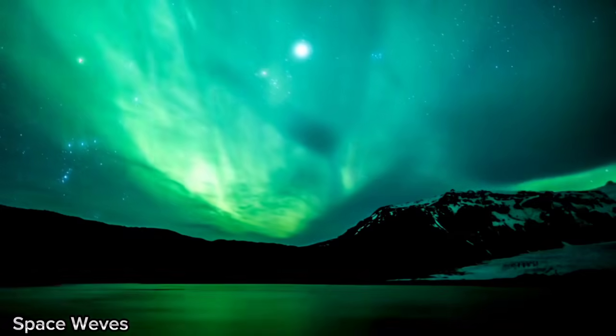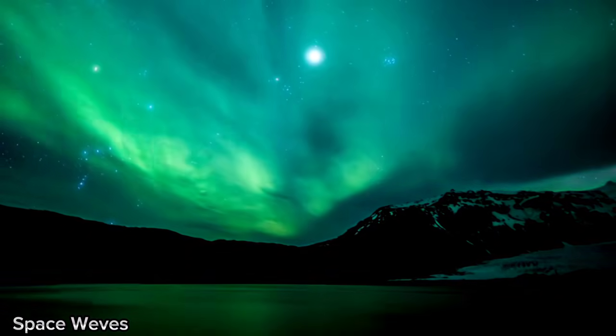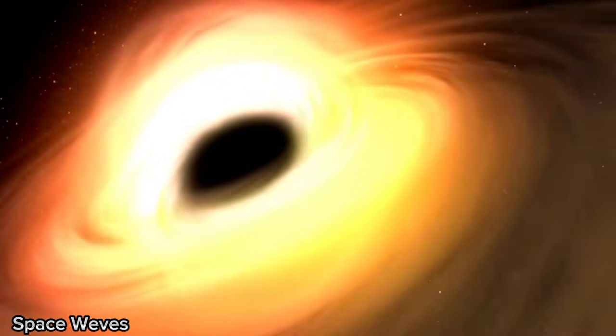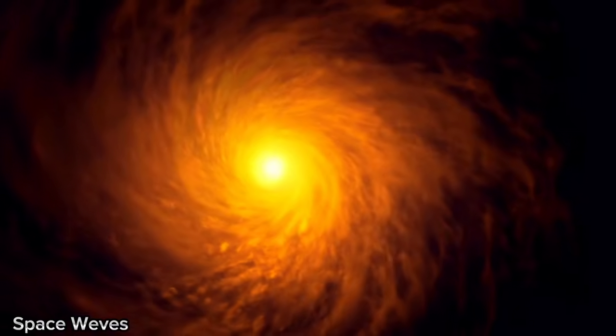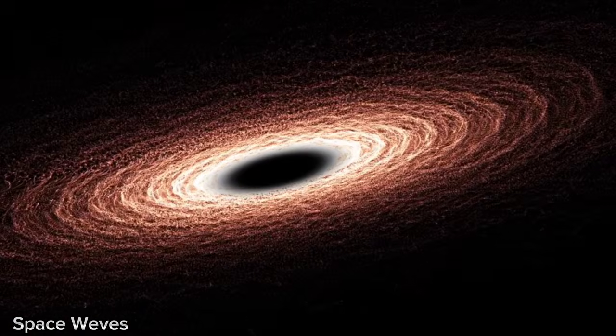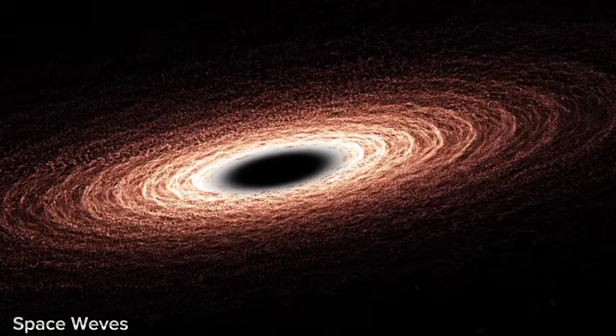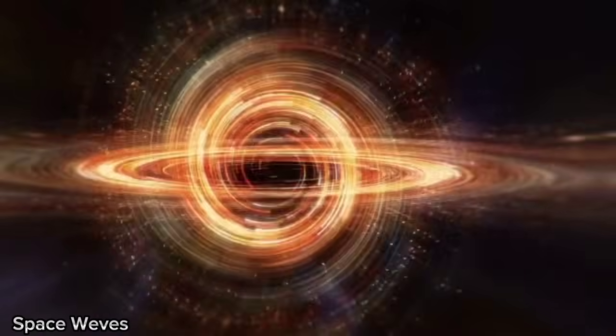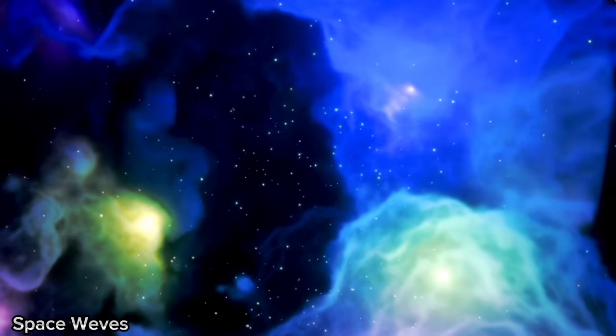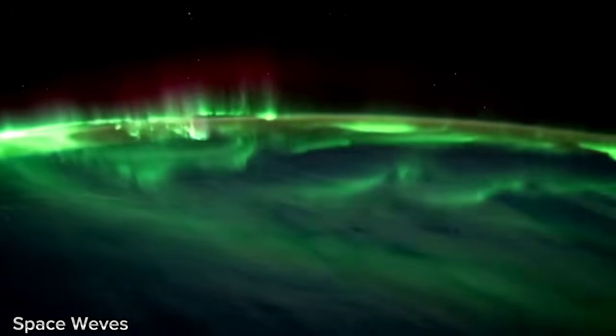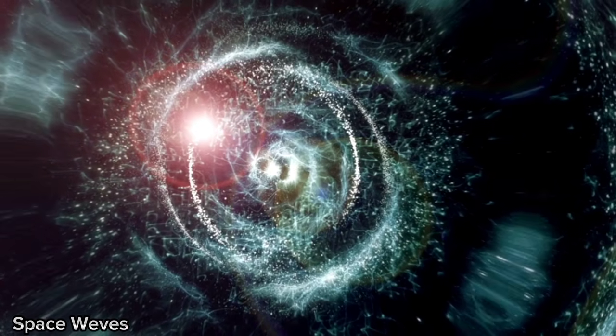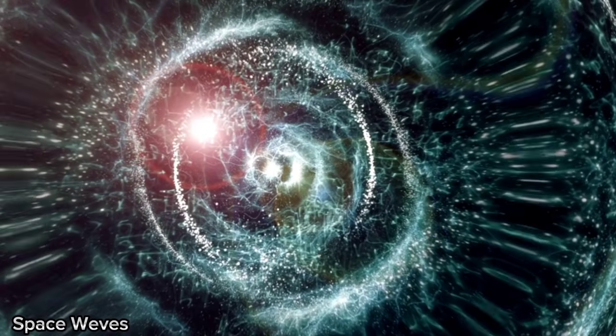The impact on our night sky: when Betelgeuse explodes, it will become one of the brightest objects in the night sky. For weeks, or even months, it could shine as brightly as a full moon, casting shadows at night. After the initial explosion, the star's brightness will gradually fade as the ejected material disperses into space. Over the next thousands or millions of years, the remnants of the explosion will form a supernova remnant, a vast cloud of gas and dust enriched with heavy elements. These elements, including carbon, oxygen, and iron, will spread into space, eventually contributing to the formation of new stars and planetary systems. In a way, the death of Betelgeuse will set the stage for the birth of future celestial bodies.